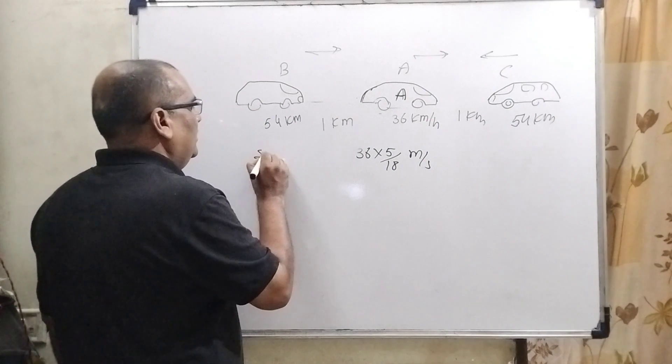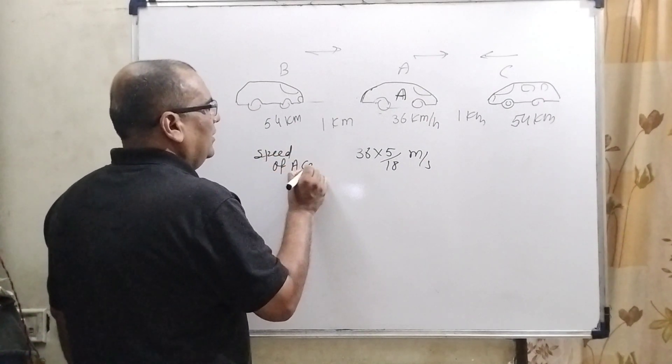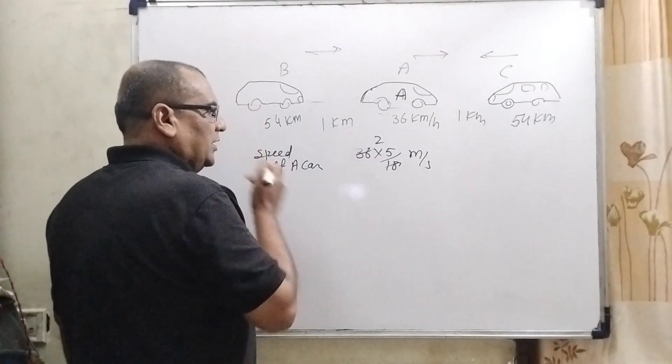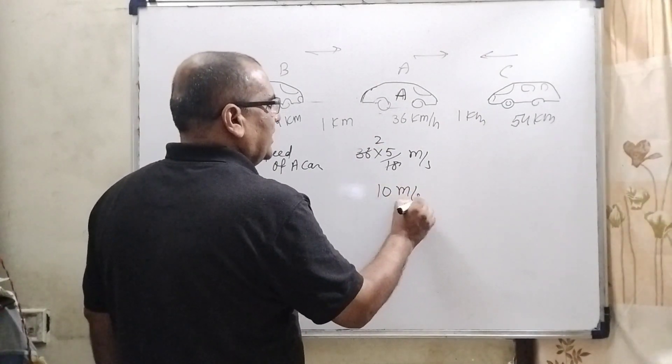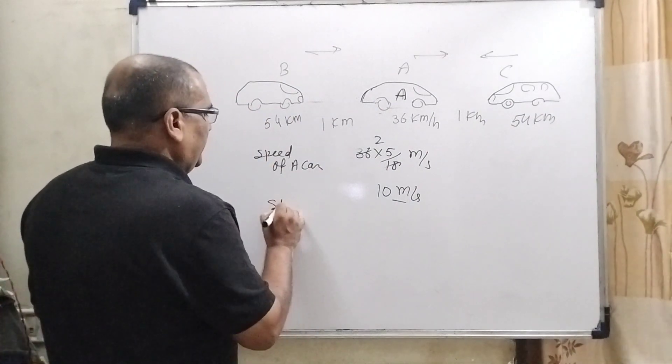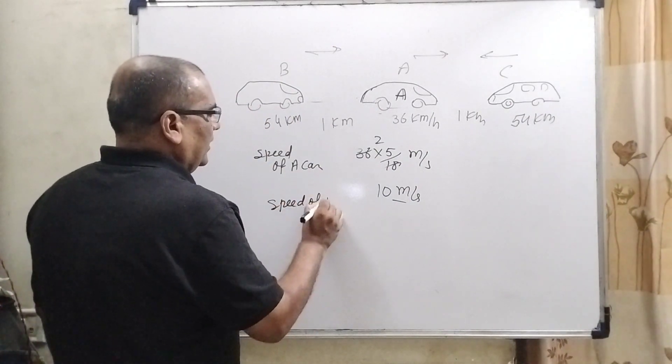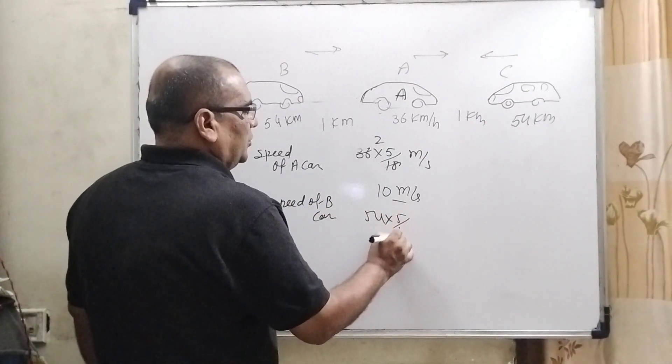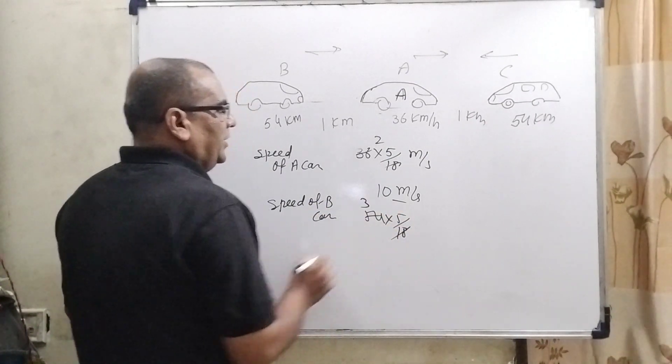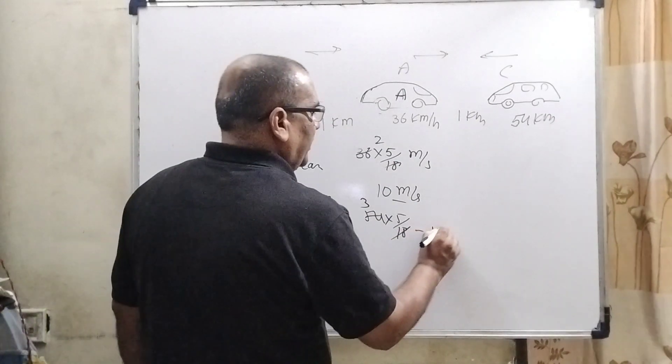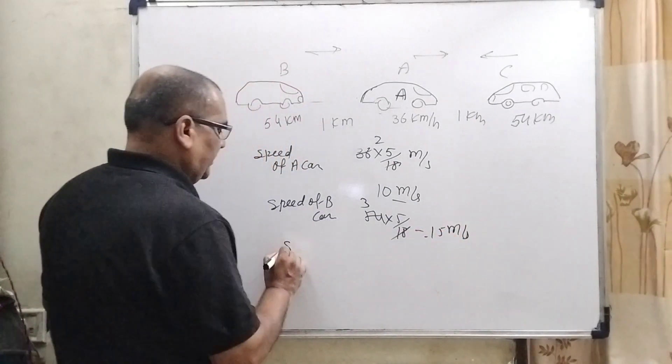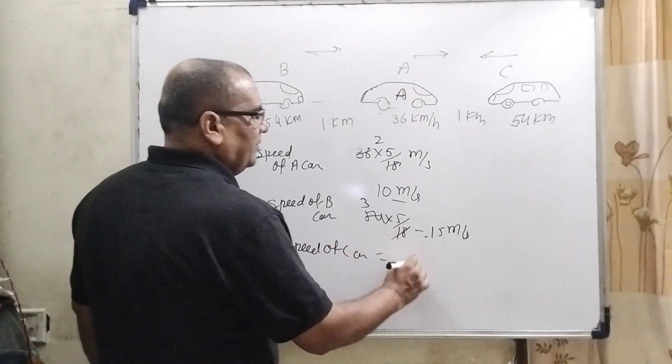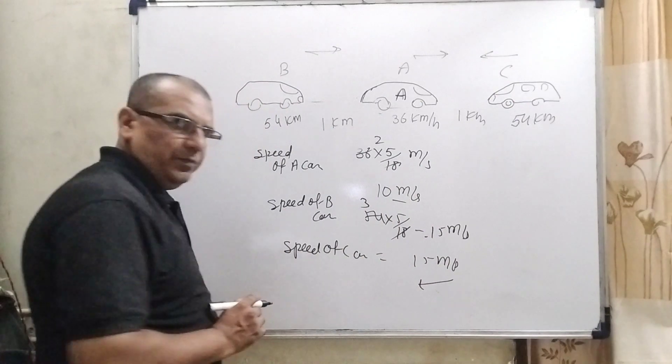So, speed of A car, that is 36 into 5 by 18, which is 10 meter per second. Speed of B car, convert into meter per second, that is 54 by 18, 15 meter per second. And speed of C car is the same, 15 meter per second, but direction is opposite.